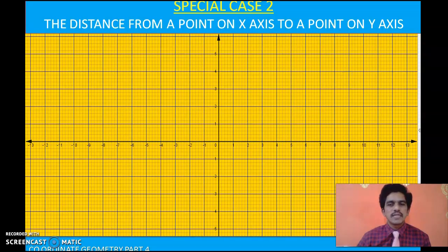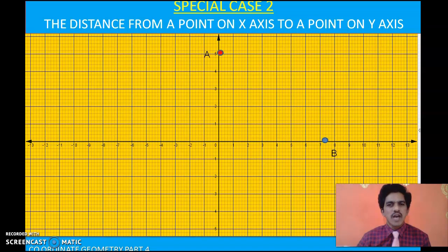Now we will move on to the second case, which is also very interesting — calculating the distance between a point on the x-axis and a point on the y-axis. When the two points are on the coordinate axes, one point on the x-axis and the other on the y-axis, one of the coordinates is 0 for each. A point is on the x-axis when its y-coordinate is 0, and on the y-axis when its x-coordinate is 0.